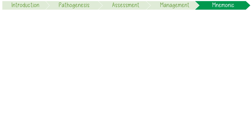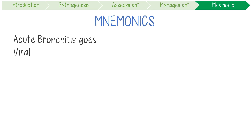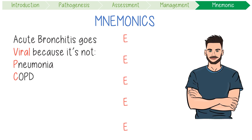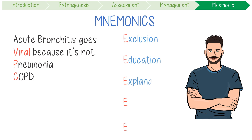Let's recap with my mnemonic: acute bronchitis goes viral because it's not PC. This reminds me it's a viral infection that occurs without evidence of pneumonia or COPD. It can be managed with the five E's: exclusion, education, explanation, expectations, and encouragement.